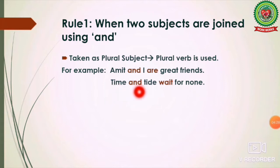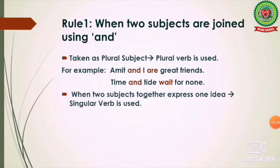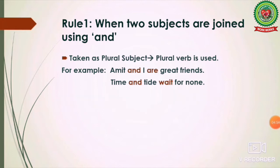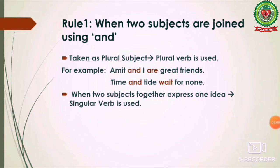'Time and tide wait for none.' Here, 'time' and 'tide' are two different things joined by 'and,' forming a plural subject, so we use the plural verb 'wait,' not 'waits.' However, there is an exception to this rule: when two subjects joined by 'and' together express one idea, they are considered as a singular subject.